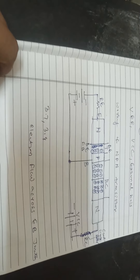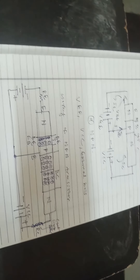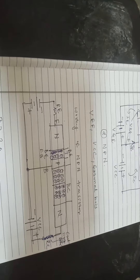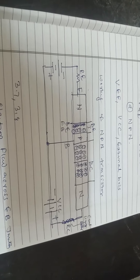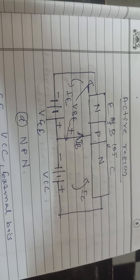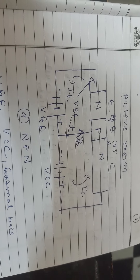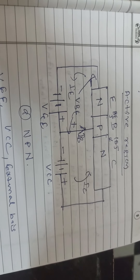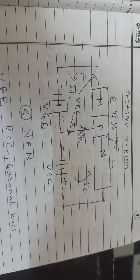This is the electron flow across the EB junction. The same phenomena occur at the CB junction. Regarding current directions in the NPN transistor — N is the emitter, P is the base, and N is the collector. The supplies VEE and VCC along with currents IE, IC, and IB are shown. All current directions and polarities are indicated in the diagram.